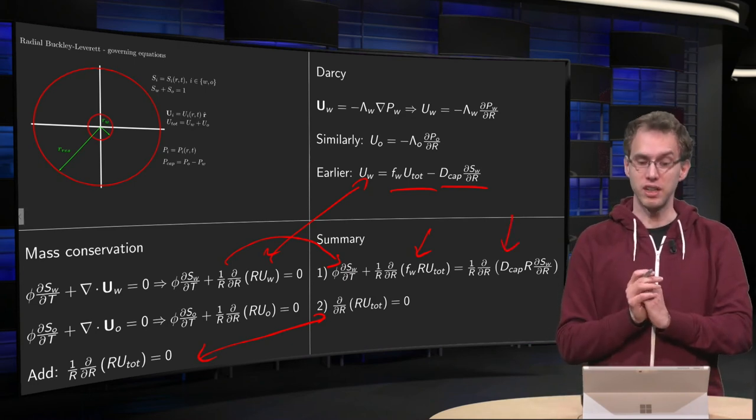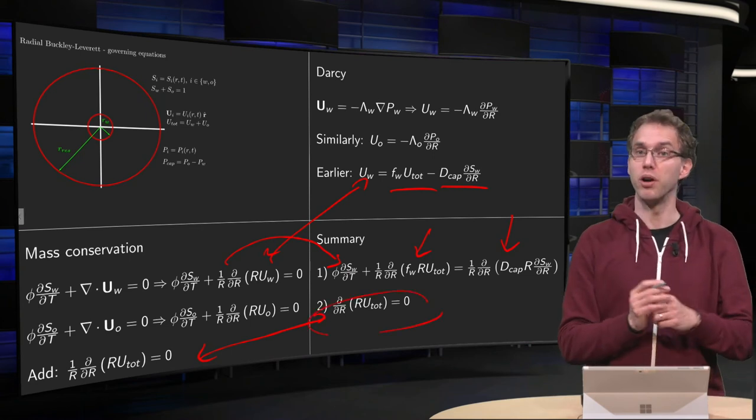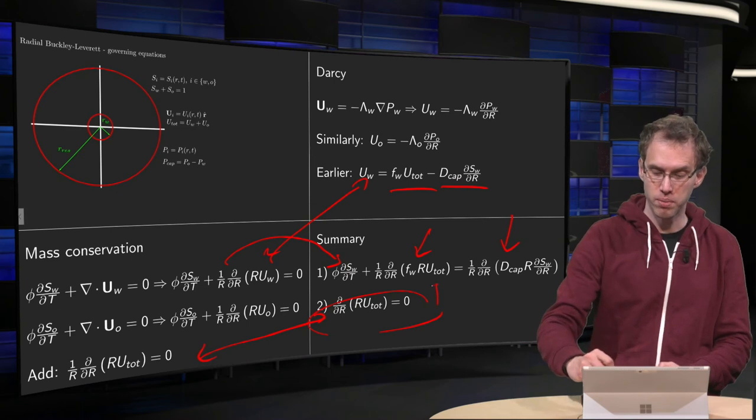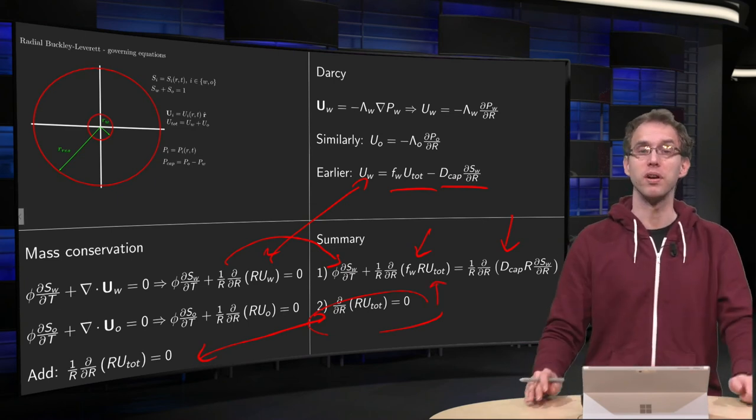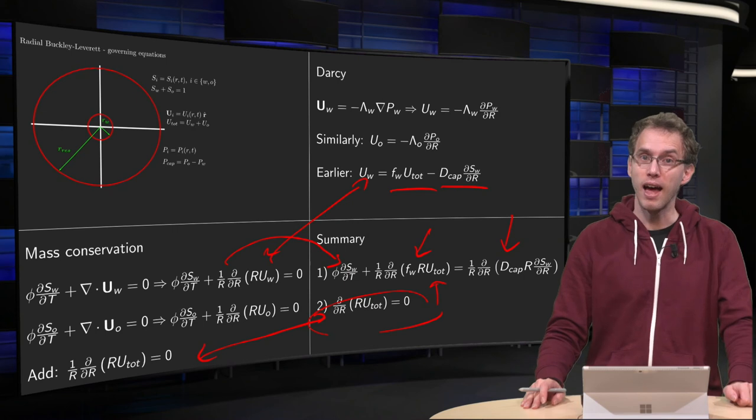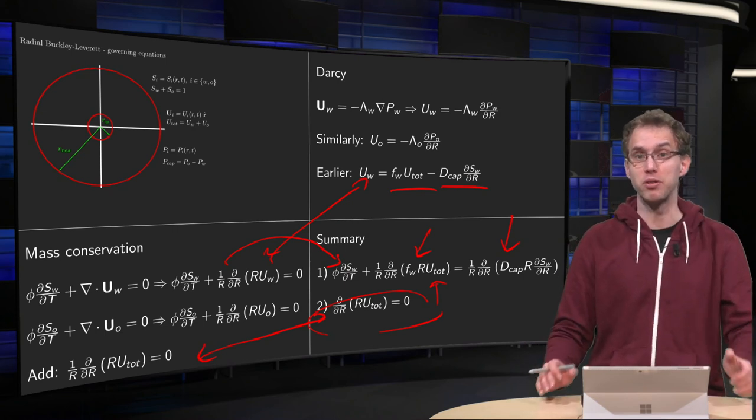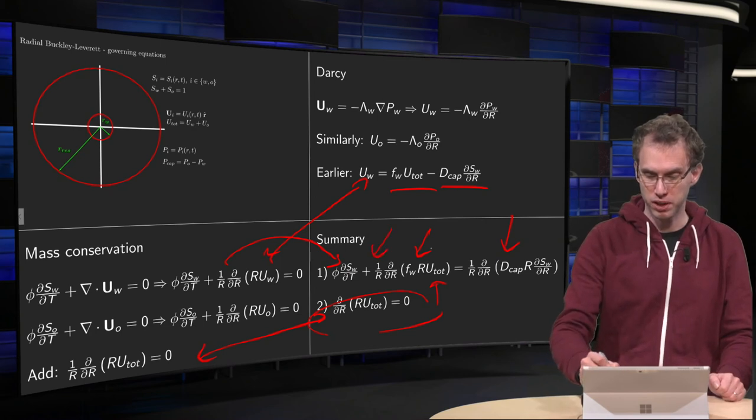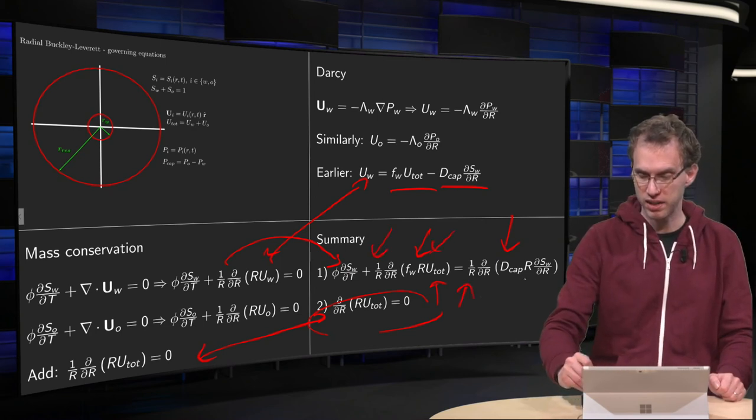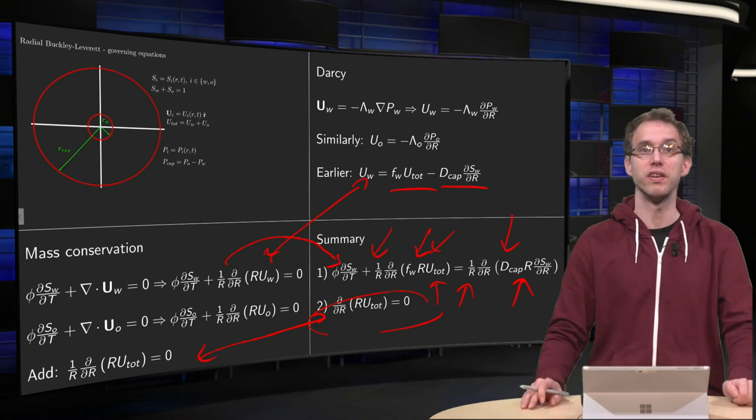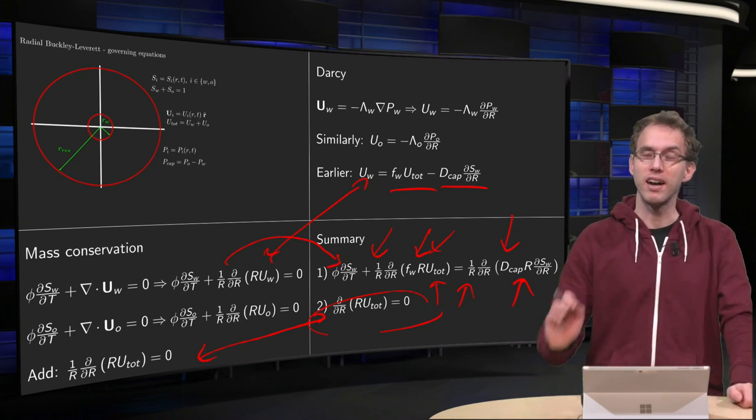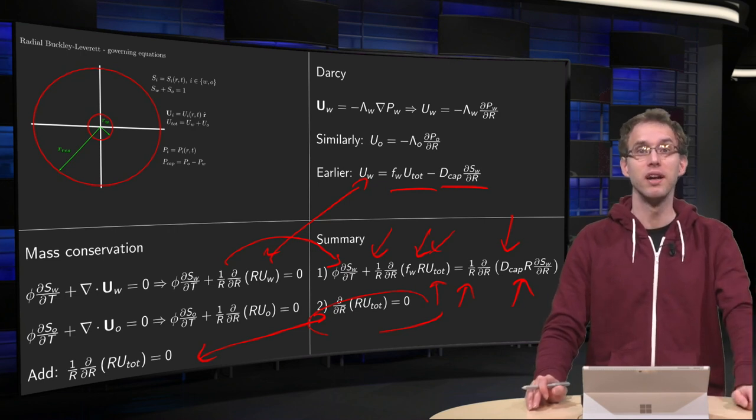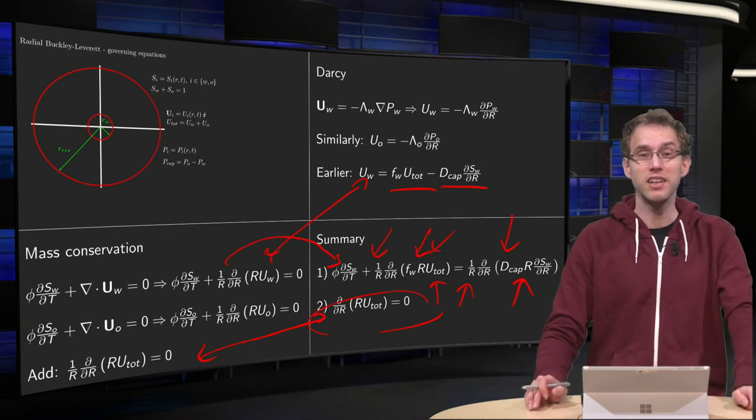So now we have two nice equations, one equation fixes your u-total, and once you have your u-total, you can plug it in over here, and have a partial differential equation for sw. And notice that it's very similar to the one in rectilinear coordinates, apart from a few factors of r which are creeping up here, and there, and there, so you have a few additional factors of r, but apart from that, your radial Buckley-Leverett equation looks very similar to your rectilinear one.